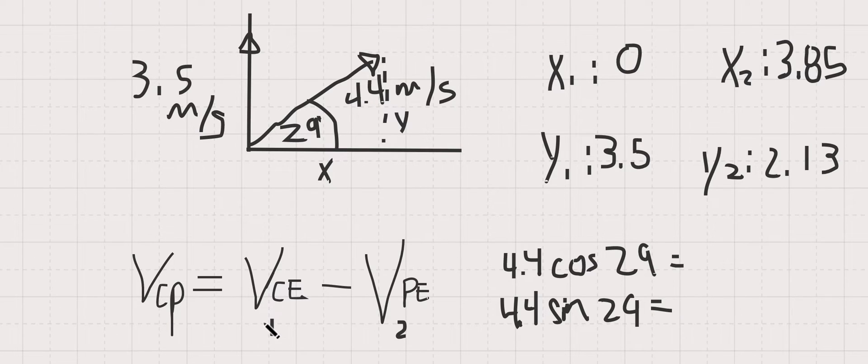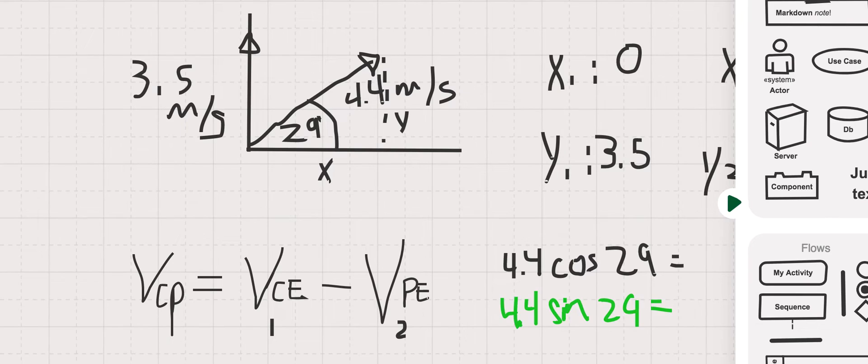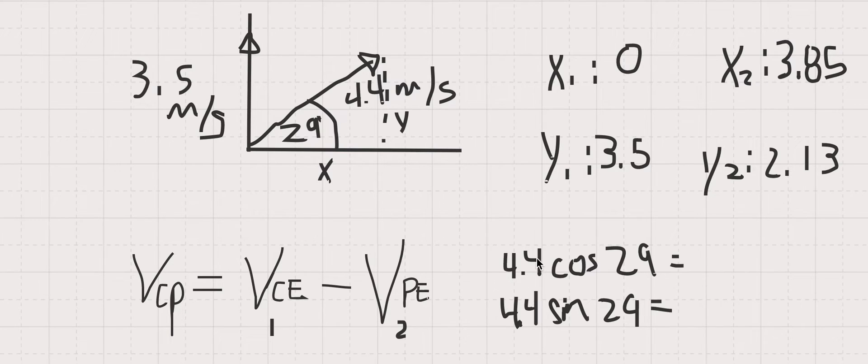So this equation is telling us that the velocity of the cruise ship with respect to the earth, these two values, minus the patrol boat, these two values, will give us the x and y components of the cruise ship with respect to the patrol boat.